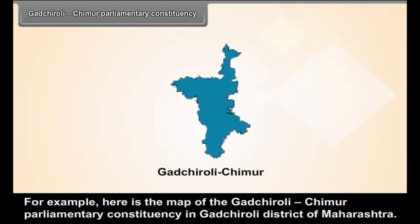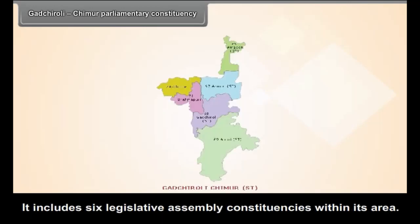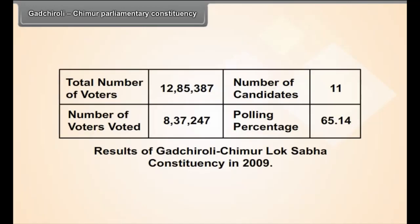Here is the map of the Gadchiroli-Chimur Parliamentary Constituency in Gadchiroli District of Maharashtra. It includes six legislative assembly constituencies within its area. Total number of voters: 12,85,387. Number of candidates: 11. Number of voters who voted: 8,37,247. Polling percentage: 65.14%.